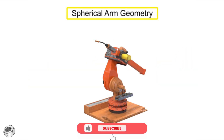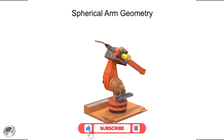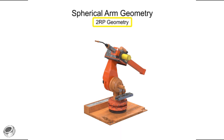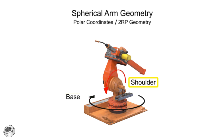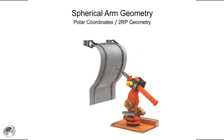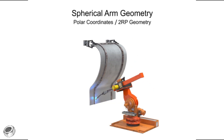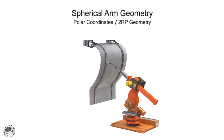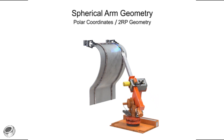Spherical arm geometry robots can rotate in two directions and move linearly in one, and thus are given the designation of 2RP. The robot has base rotation, shoulder rotation, and prismatic or linear motion at the arm. This type of robotic arm is most often used in machine tending, material handling, welding, painting, coating, and assembly tasks.